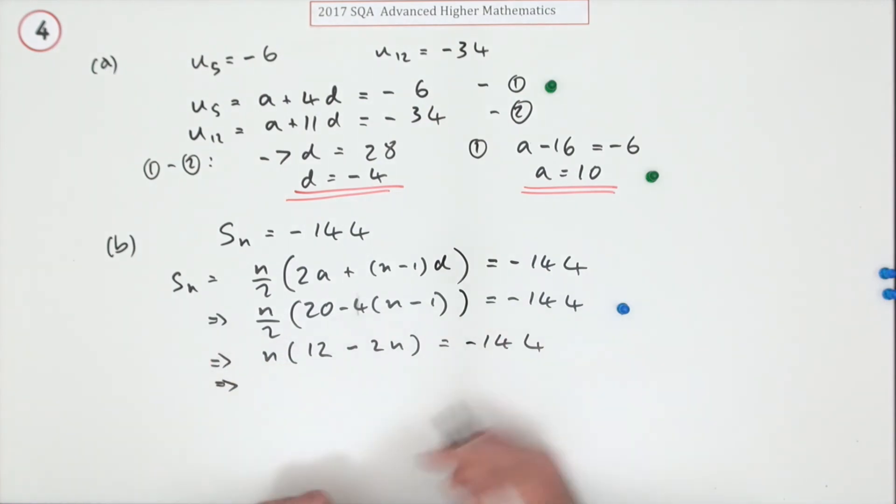Now just move all the terms about. I've got 2n squared, but I'm going to write it on this side. I would have 12n, so it'll be minus 12n, that stays there, minus 144 equals zero. Oh, I've got twos in it again, I'll just take them out. You get a mark for getting as far as that: n squared minus 6n minus 72 equals zero.